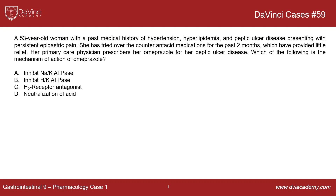She has tried over-the-counter antacid medications for the past two months, which have provided little relief. Her primary care physician prescribes her omeprazole for her peptic ulcer disease, so her physician is prescribing a stronger medication to help treat her symptoms.